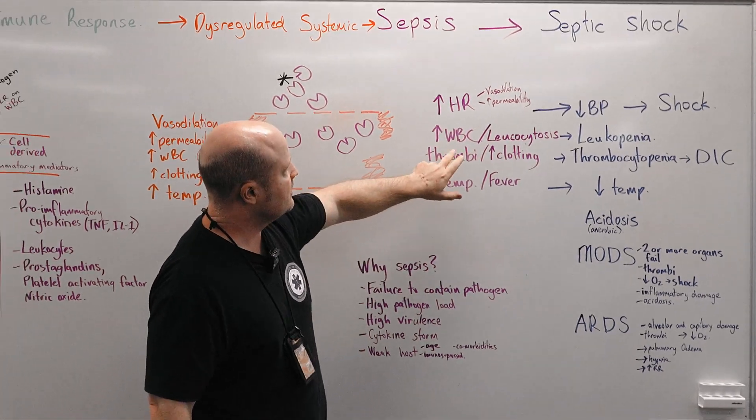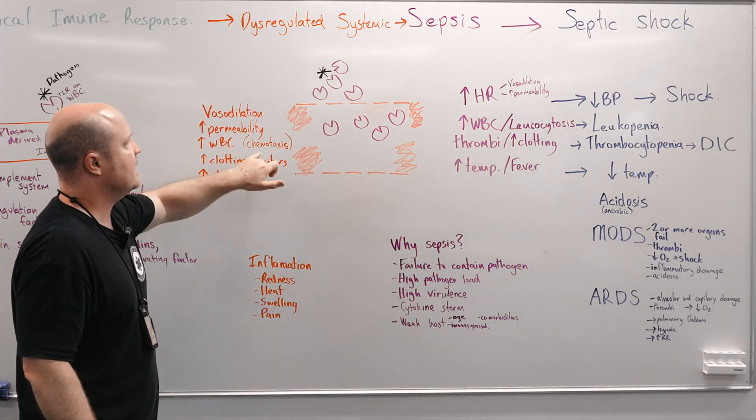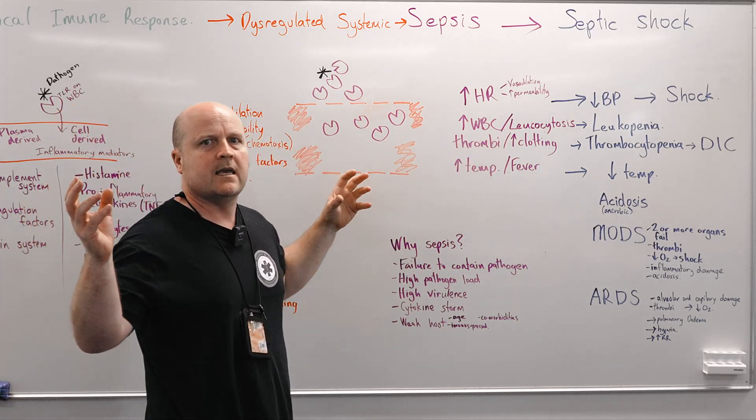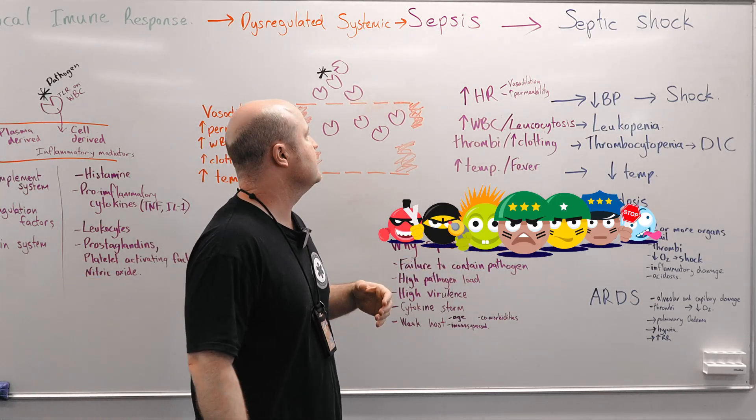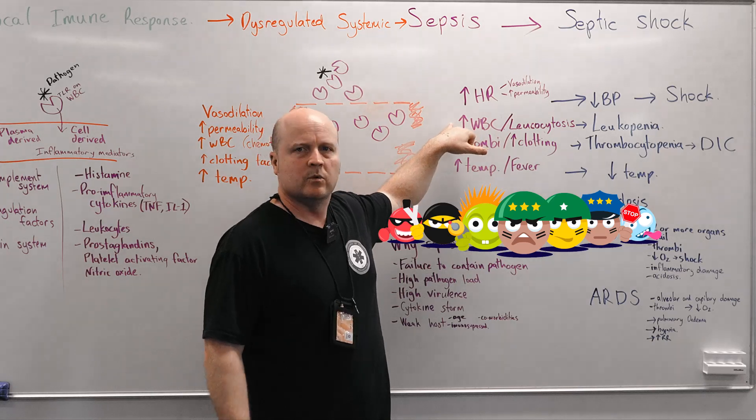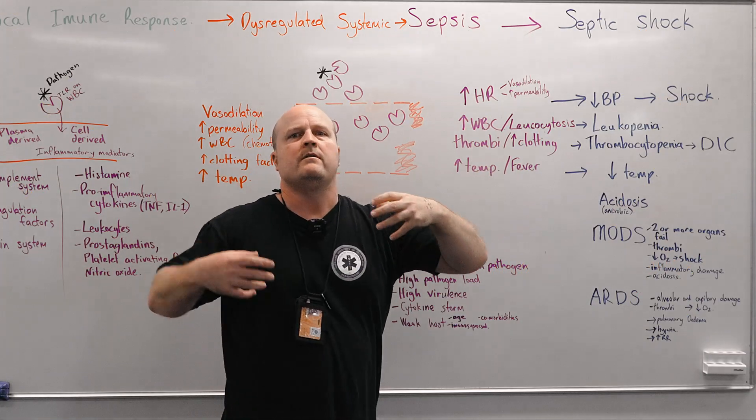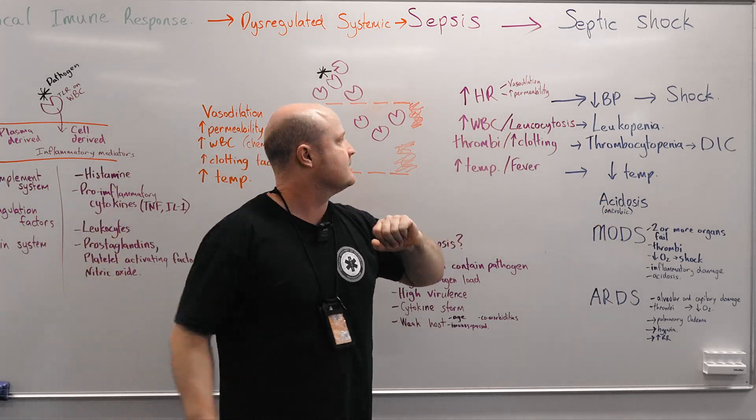Next thing, if we have our chemotaxis and we want to get more white blood cells to a local area, same thing's going to happen systemically now. So our white blood cell count will increase. So we'll get leukocytosis. So we flood our body with white blood cells.